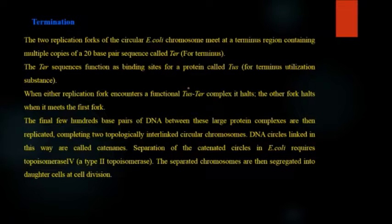Afterward termination occurs. The two replication forks of the circular E. coli chromosome meet at terminus region containing multiple copies of a 20 base pair sequence called TER which stands for terminus. The TER sequences function as binding sites for a protein called TUS which stands for terminus utilization substance. When either replication fork encounters a functional TUS-TER complex it halts. The other fork halts when it meets the first fork. The final few hundred base pairs of DNA between these large protein molecule complexes are then replicated completing two topologically interlocked circular chromosomes.